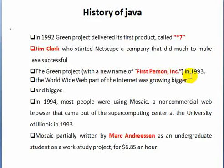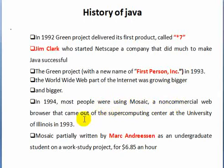In 1993, and in 1994, most people were using Mosaic — a non-commercial web browser that came out of the Supercomputing Center at the University. The non-commercial website was widely used in 1993.